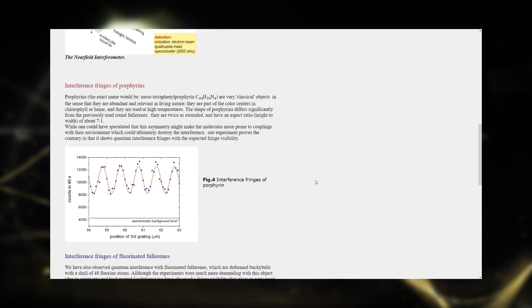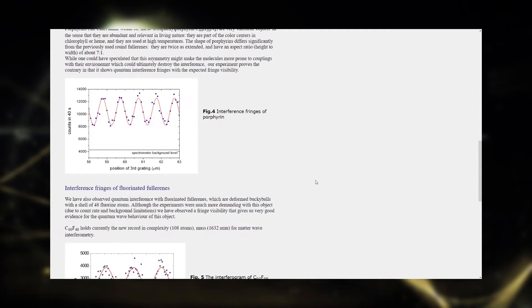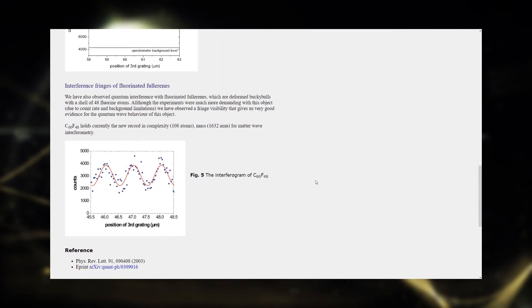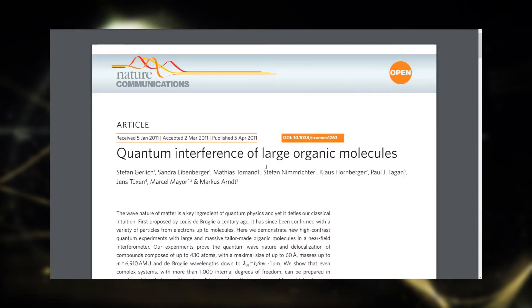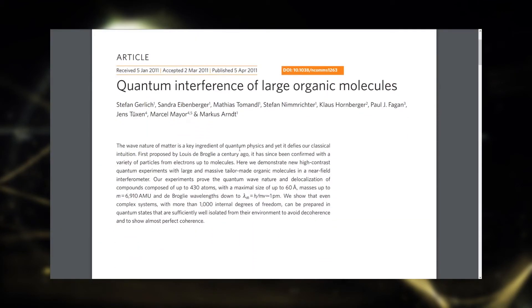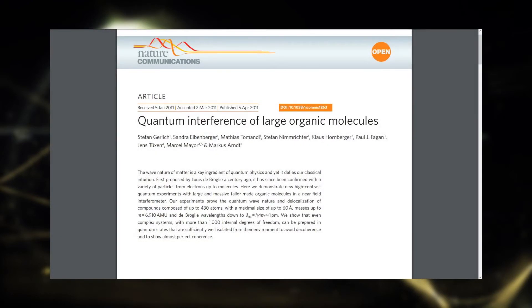They created interference patterns of heavy C60F48 fullerene molecules, and in 2011 of even bigger molecules consisting of up to 430 atoms, that demonstrated that even classical objects, molecules, have a type of wave nature.